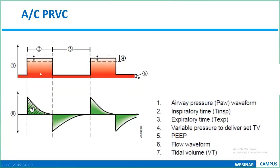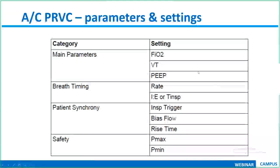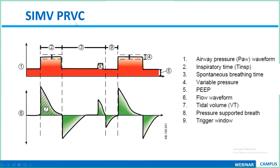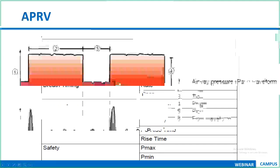PRVC in SIMV mode combines pressure-regulated volume control with SIMV — between mandatory breaths, the patient can take spontaneous breaths. Settings include FiO2, PEEP, target tidal volume, and pressure support for spontaneous breaths, plus a pressure limit as a safety parameter. The inspiratory pressure still changes automatically with tidal volume feedback, though it is a pressure control mode. APRV (Airway Pressure Release Ventilation) and bi-level systems are additional advanced modes that require more dedicated session time.